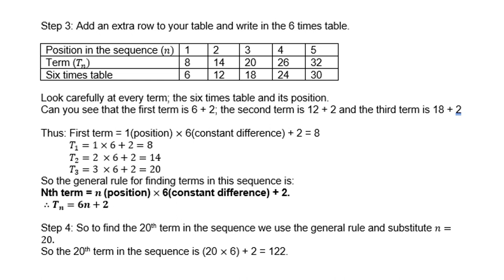Step 4: to find the 20th term, use the general rule and substitute n = 20. So the 20th term is 20 times 6 plus 2, which equals 122.